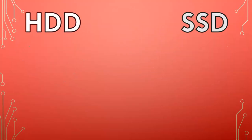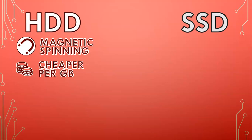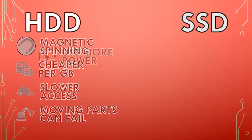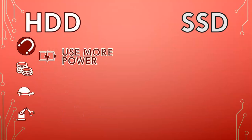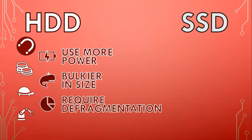To recap: hard drives are storage devices that use magnetic spinning disks to read and write data, making them cheaper per gigabyte and available in larger capacities, but they are slower when accessing data. They have moving parts that can fail, they tend to use more power to function, and all this makes them larger and bulkier in size. Hard drives also require defragmentation to maintain performance.